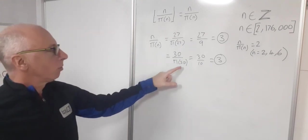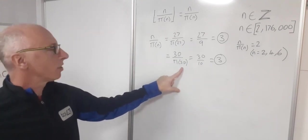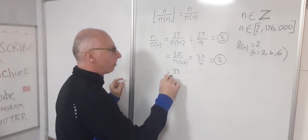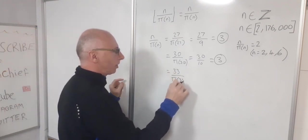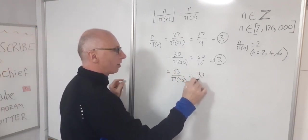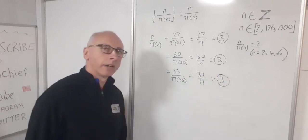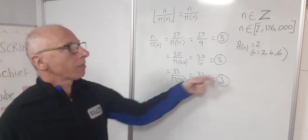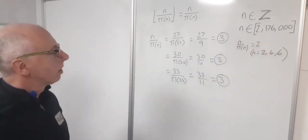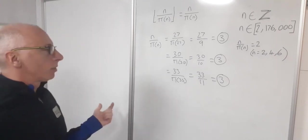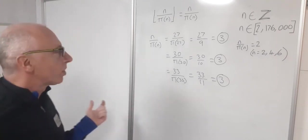what about the next ones? Well we know 31 is a prime number and there's no more between that and 33. So we can say that 33 over pi of 33, that gives us 33 over 11, which gives us 3. And then I went all the way through to 176,000. No more solutions that give me 3. So let's see if we can find any solutions that give us 4.